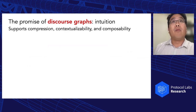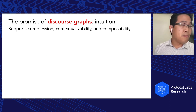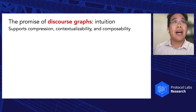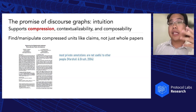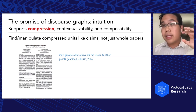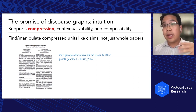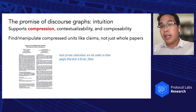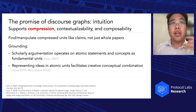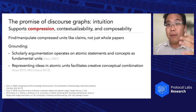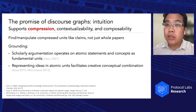I like to think about discourse graphs in terms of three C's: compression, contextual visibility, and composability. Compression means we want to find and manipulate compressed units like claims, not just whole papers. Papers contain lots of different things, but we actually care about manipulating and thinking about the underlying ideas. In creativity literature, if you break things down, that enables you to more creatively recombine them into new theories, models, and concepts.